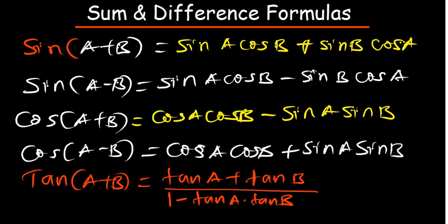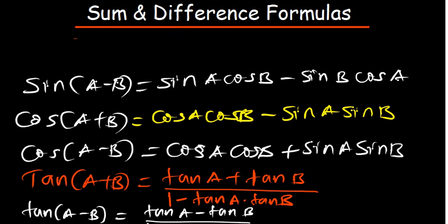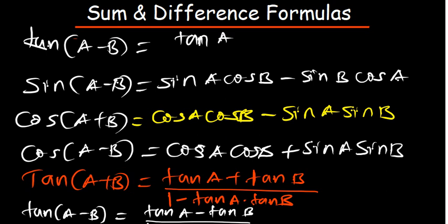Now if I have the one for minus, tan A minus B is going to be tan A minus tan B, everything divided by 1 plus tan A times tan B.